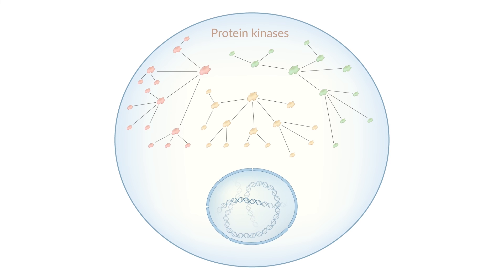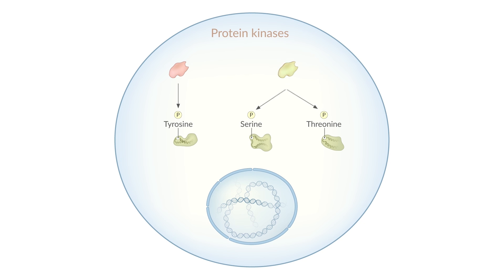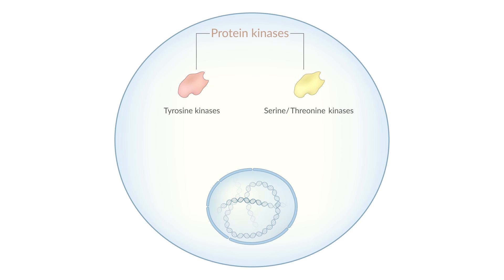Given the large number of kinases, it is impossible to remember them all. However, you may want to keep in mind that they can be broadly classified according to the amino acid residues they phosphorylate. They usually act on one of three residues: tyrosine, serine, or threonine. Kinases that are able to transfer phosphate groups to serine residues are also able to do so for threonine residues. Therefore, they are often grouped together as serine-threonine kinases. This leaves us with two large groups: tyrosine kinases and serine-threonine kinases.